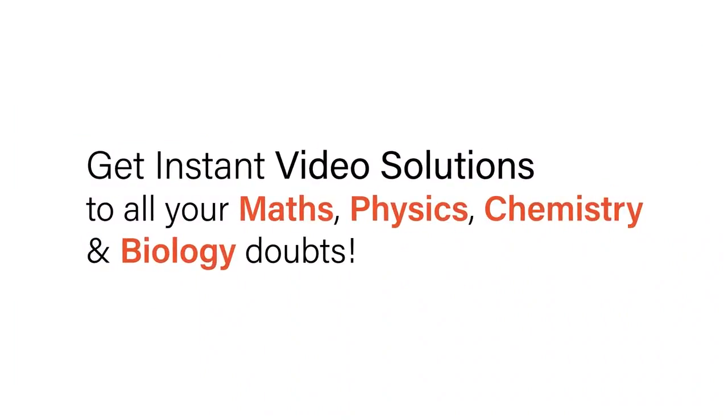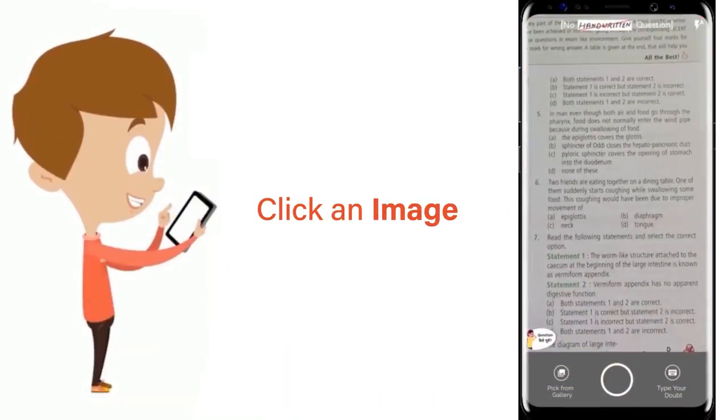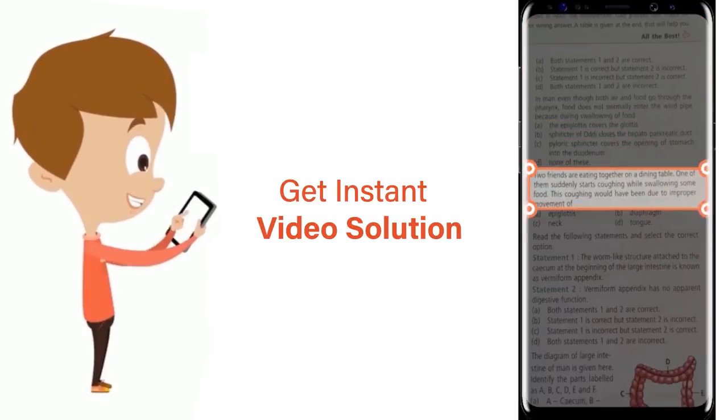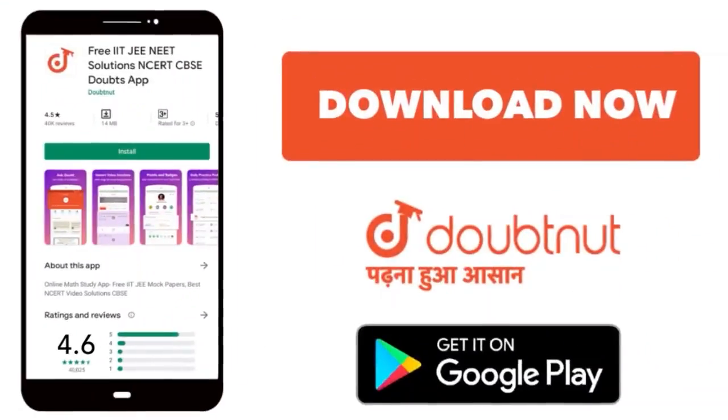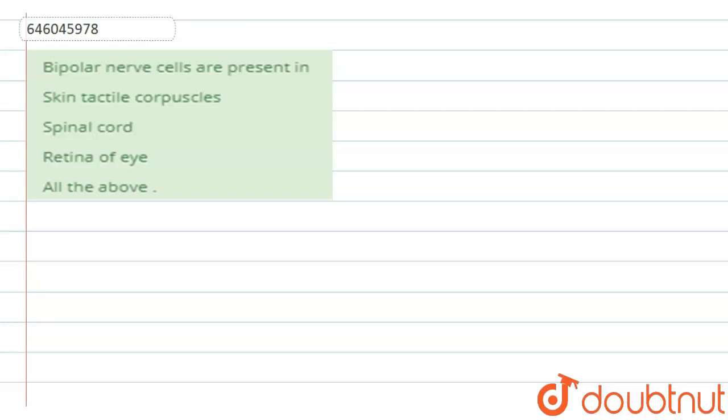With Doubtnet, get instant video solutions to all your math, physics, chemistry, and biology doubts. Just click the image of the question, crop the question, and get instant video solution. Download Doubtnet app today. Hello students, the question says bipolar nerve cells are present in: given options are skin tactile corpuscles, spinal cord, retina of eye, or all of the above.